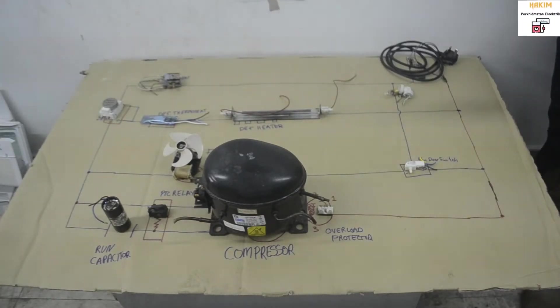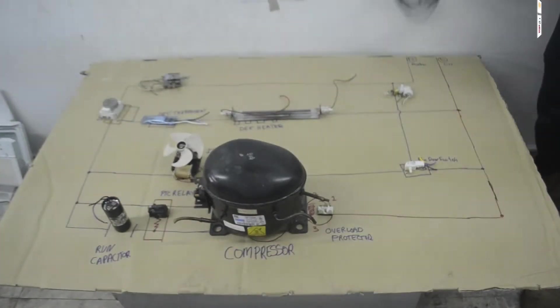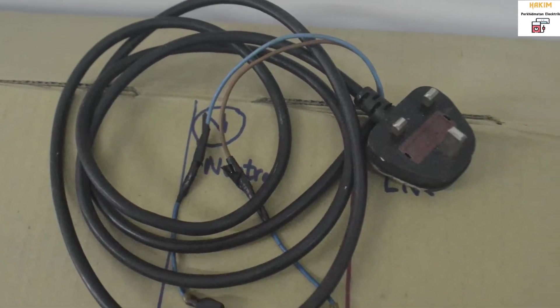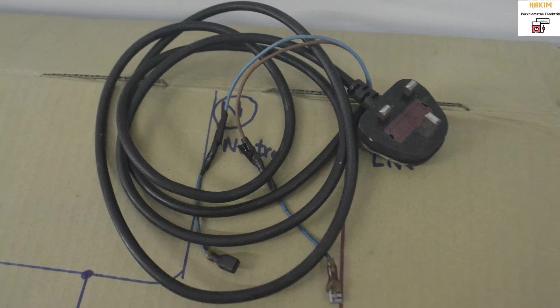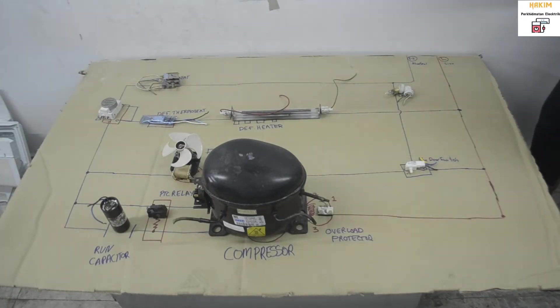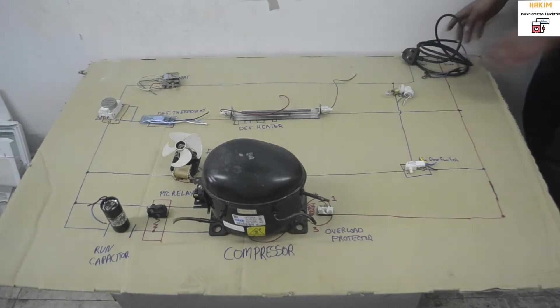So let's begin with the switch. The refrigerator gets supply of electricity from the switch. The main two wires are neutral and live. These two supply electricity to the refrigerator.